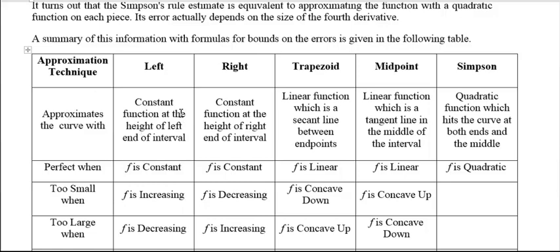So what kind of curve are they approximating? The left Riemann sum is approximating the function with a constant function, where the height is at the left end of the function. And the right Riemann sum is the same thing, a constant function, but this time the height is at the right end of the interval. Trapezoid's a linear function, which is a secant line between the endpoints of the interval. And the midpoint is a linear function, which is a tangent line in the middle of the interval.